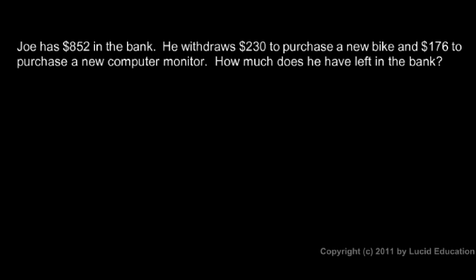Well withdrawal means taking the money out. And he does that twice. He withdraws $230 and then withdraws $176. So we can start with the $852 and then just take away those amounts. We'll take away the $230 first. $852 minus $230.